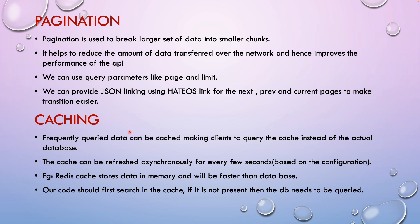It is always a good practice to return only the first page to the users and to provide the links for the first page, last page, previous page, or to provide request parameters as page numbers so that if they want a specific third page, they can send the request parameter equals three which will return the third page. Pagination breaks the larger set of data into smaller chunks and helps reduce the amount of data transferred over the network, which will improve the performance of the API.